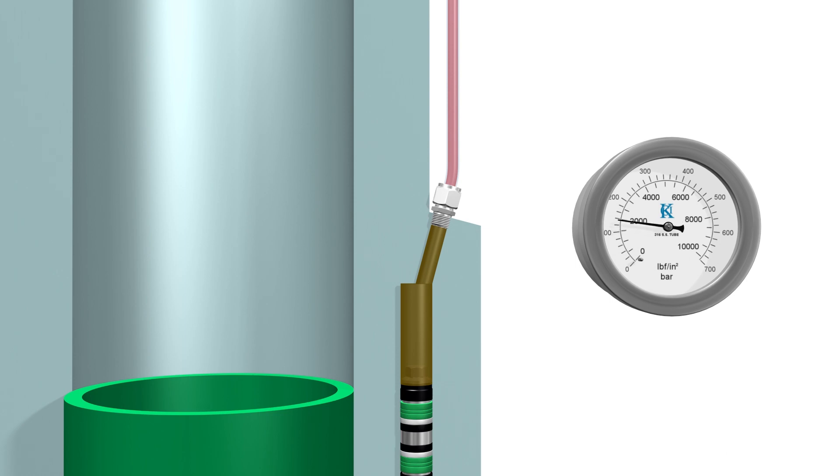As the sealing elements block the leak path, the pressure rises in the system, indicating that the leak has been repaired and the downhole safety valve will open.